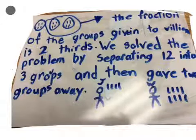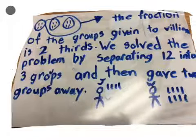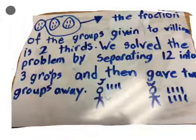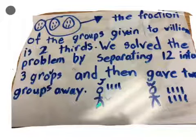The fraction of the groups given to William is two-thirds. We solved the problem by separating 12 into three groups and then gave two groups away. Here is a picture.